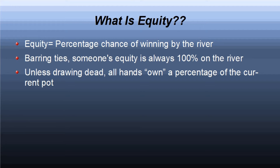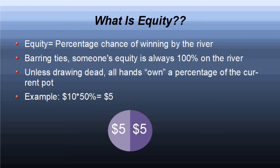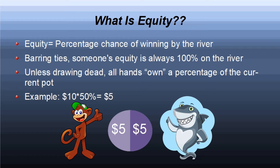For example, if there are two players in a $10 pot and each has 50% equity, then each owns $5. If they got all in a million times, no one would win any money in this spot, but no one would lose either. They would have an equal share of the equity of the pot.